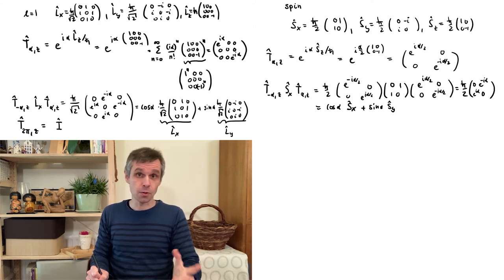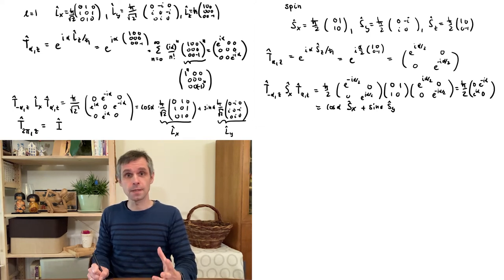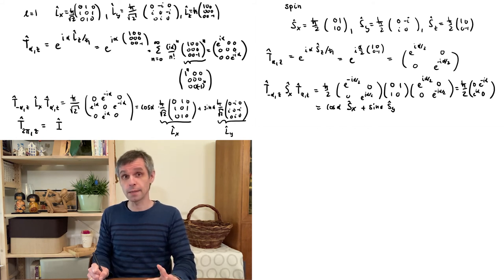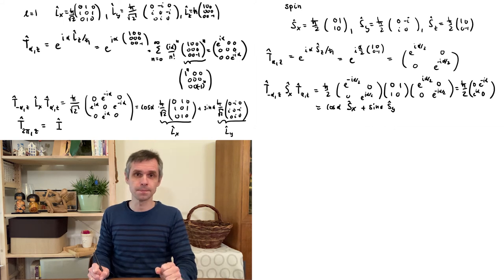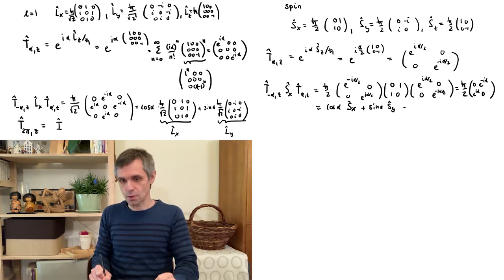This is very nice — everything looks just like what we had for angular momentum. We can do the same for the y-component and obtain the same result. None of this is a surprise because it can all be derived using the commutation relations, which are the same for spin operators as for angular momentum.